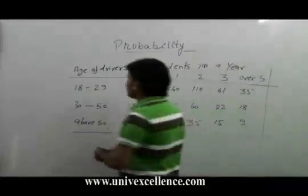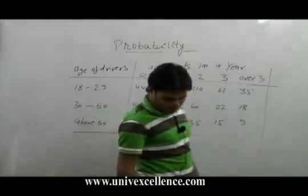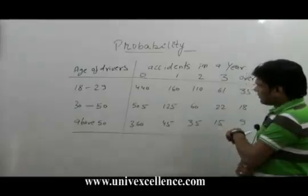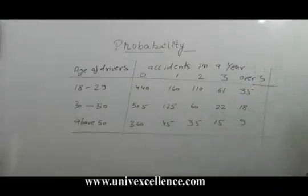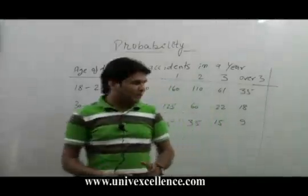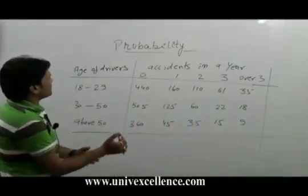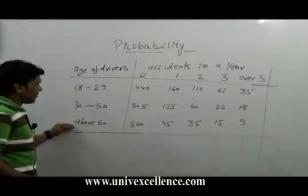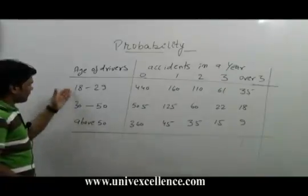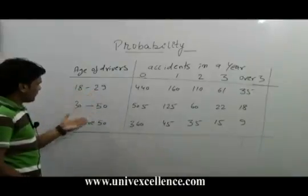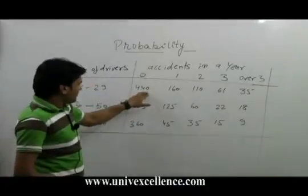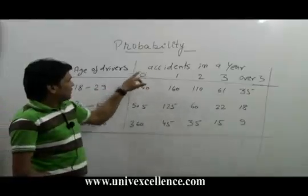If the age of drivers 18 to 29 were observed, there are a total of 2000 drivers being selected. The government of any state observed that among the 2000 drivers of age 18 to 29, 30 to 50, and above 50, total people were 2000. Among those 2000 drivers, 440 are of age between 18 to 29 with 0 accidents.